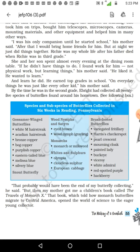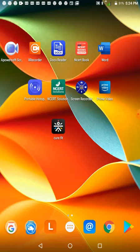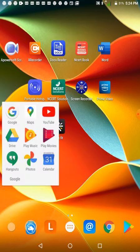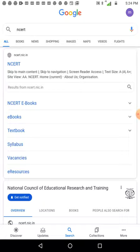Starting from the first paragraph: 'I was his only companion until he started school,' his mother said. 'After that I would bring home friends for him, but at night we just did things together. Richie was my whole life.' So after his father died, Richie was the only one she was concentrating on.